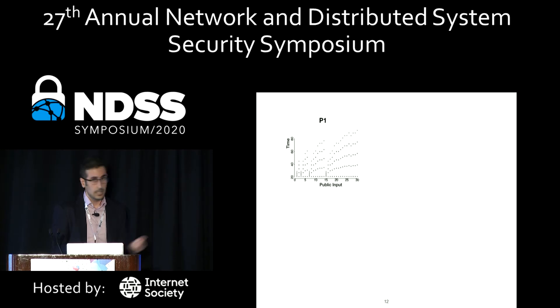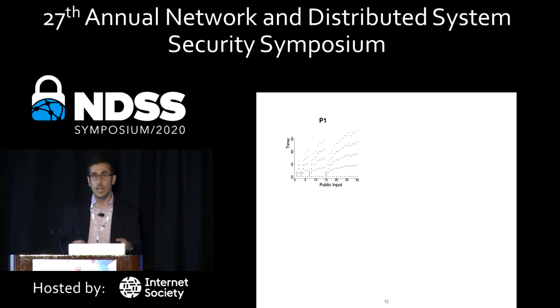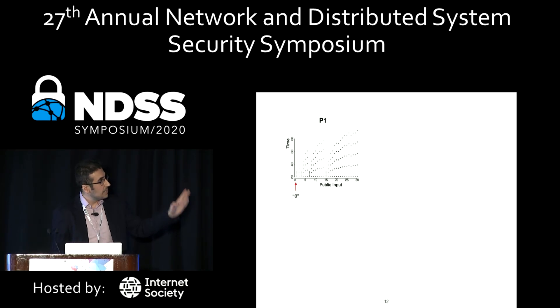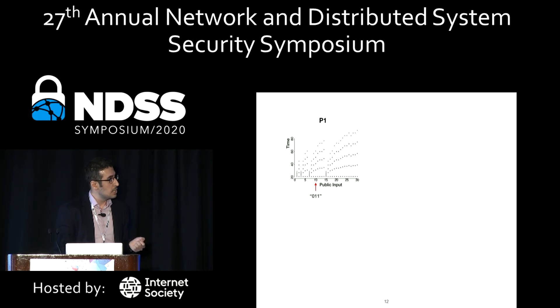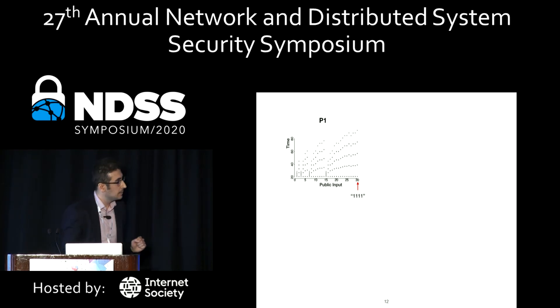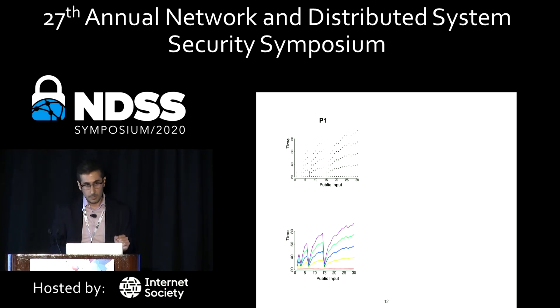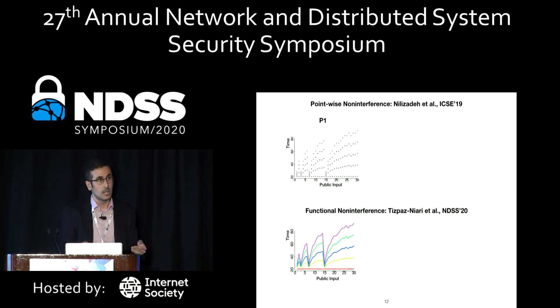This is also important from a debugging point of view. Program P1 leaks the number of set bits. With point-wise observation, on the y-axis we have time and on the x-axis different public inputs from bit stream 0 up to 1111. We have similar values for the secret. What the existing definition — point-wise non-interference — says is: fix public input to a value; any variation depends only on secret values. For any public input, we see five classes in the response time. That matches with the functional observation, which also shows five classes of functions.